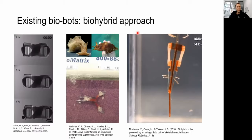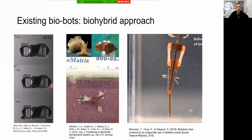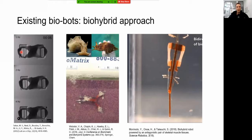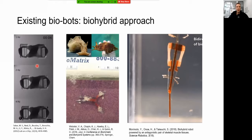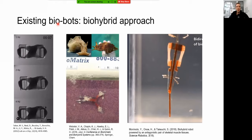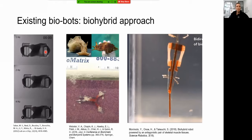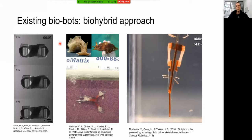Some of the earliest examples include this one from the Asada lab: a plasticine backbone with a ring of muscle tissue wrapped around it. By pulsing current in an aqueous media at different frequencies, you can generate a walking biohybrid robot. This is fairly simple conceptually, but it's one of the first really good examples of combining biological components with artificial scaffolds.